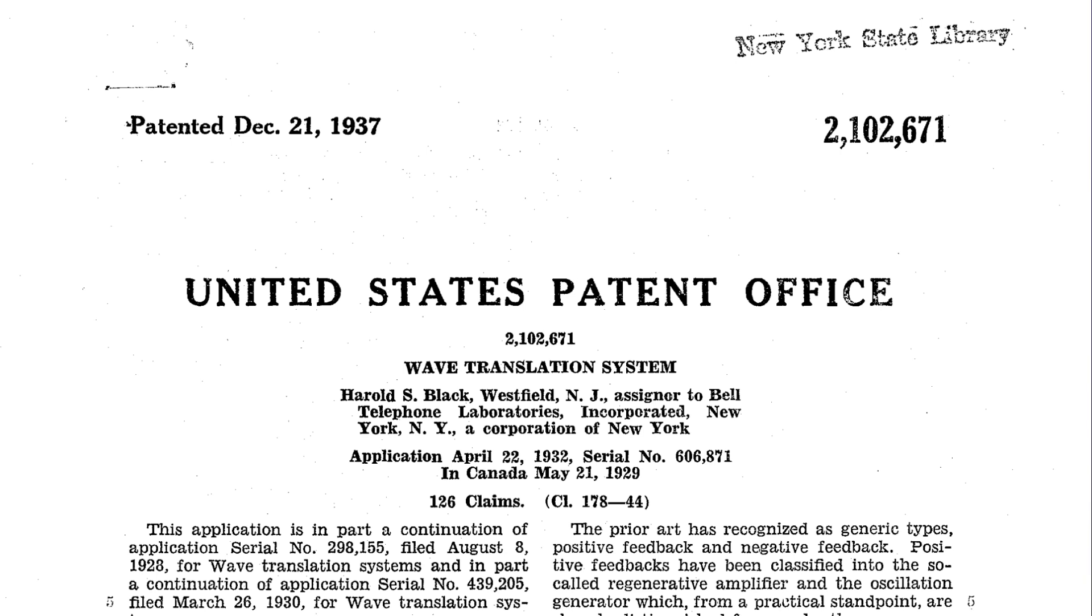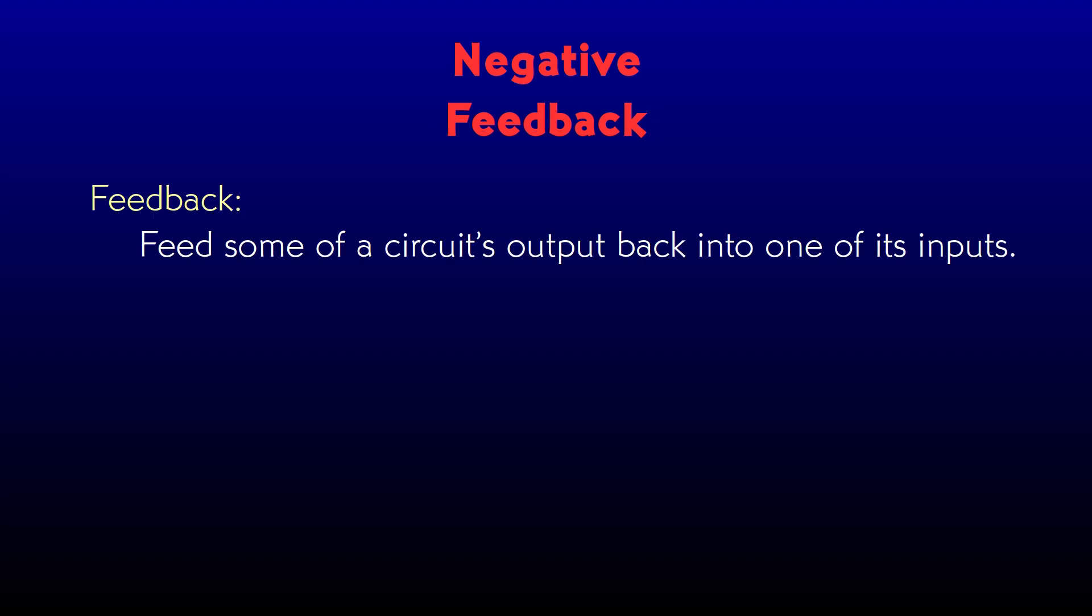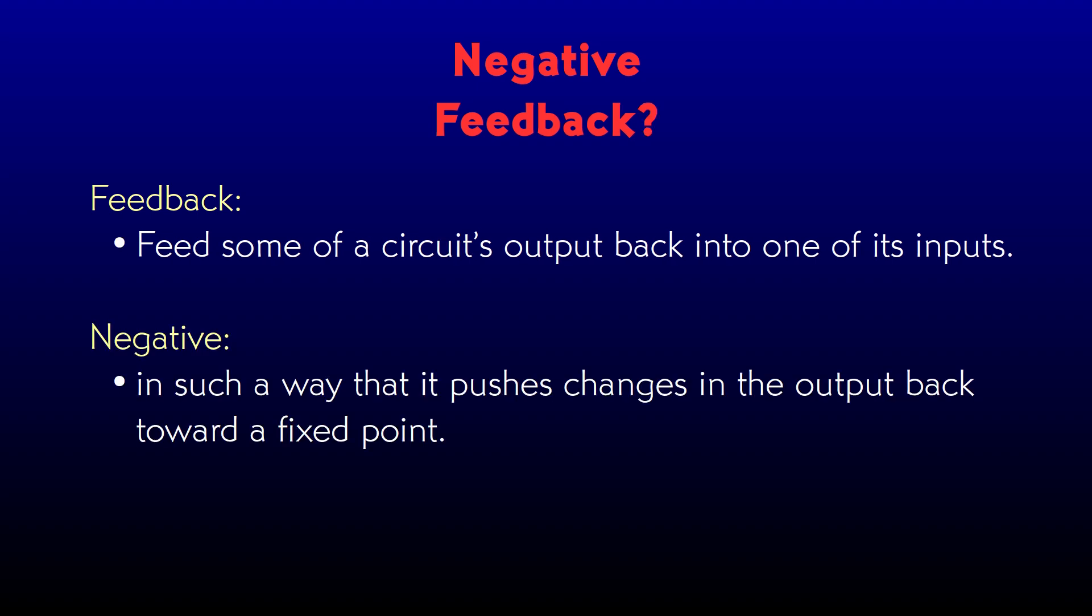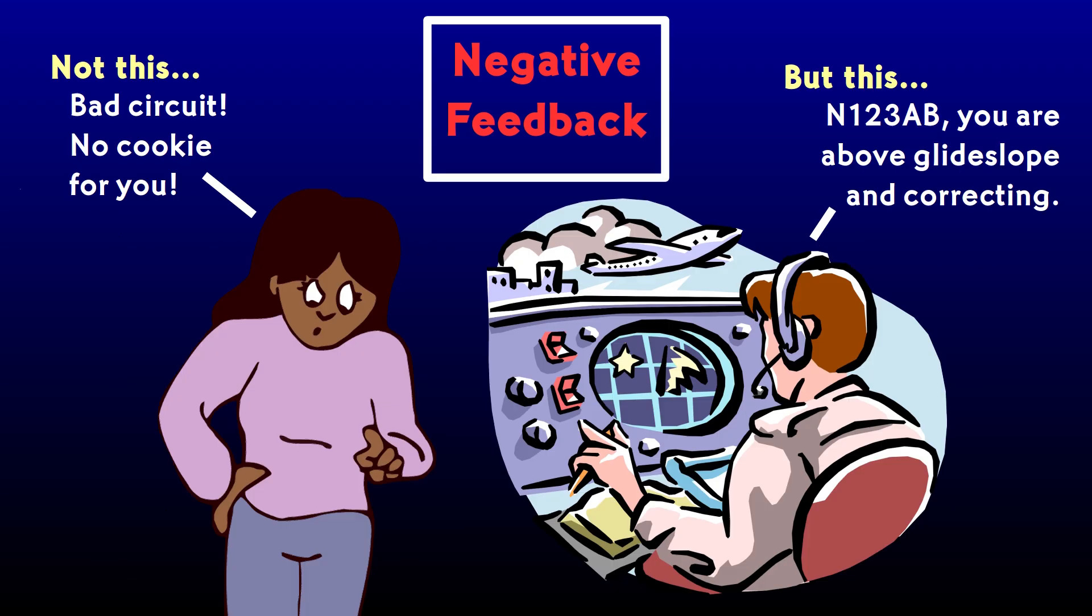But what is this negative feedback that Black proposed? Well, we can define feedback as the process of feeding part of a circuit's output back to one of its inputs. And negative feedback means that the signal is fed around in such a way that a deviation in the output is pushed back toward a stable state. Positive feedback, on the other hand, would push a deviation in the output farther in the same direction. Feedback appears so much in electronics that the term has made its way into the popular culture, but the popular culture has warped it.